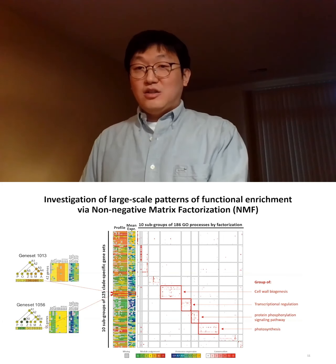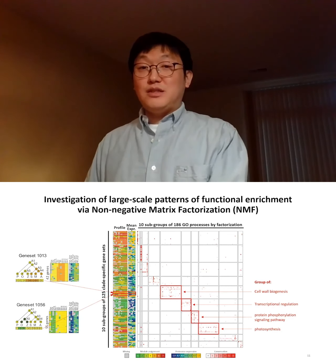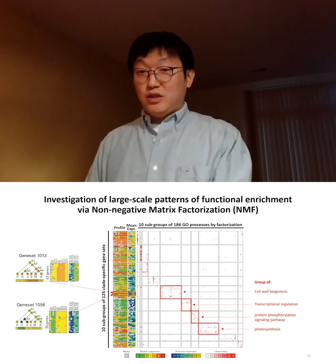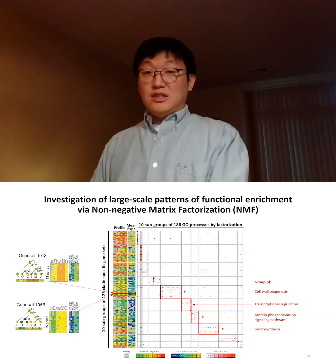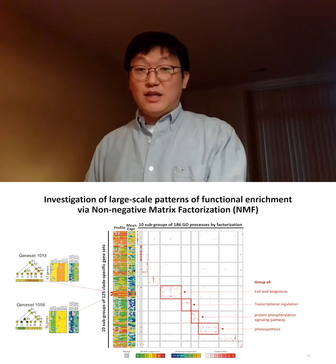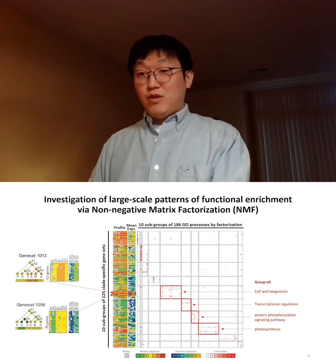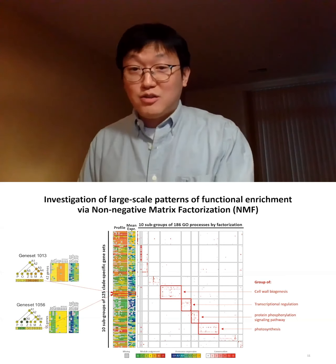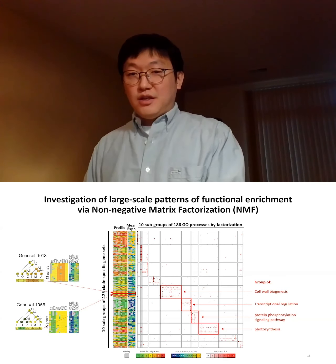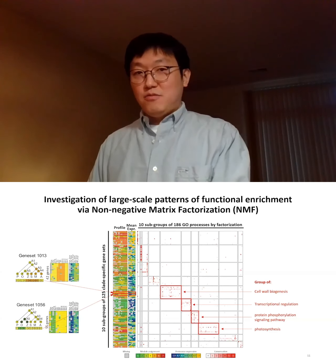To investigate large-scale patterns in the enrichment of clade-specific gene sets, we applied a non-negative matrix factorization (NMF)-based biclustering to the matrix of profiles consisting of counts for species showing enrichment for those GO processes. This analysis grouped both gene sets and associated process terms into tens of groups, enabling us to characterize representative process terms capturing cell wall biogenesis, transcription regulation, and similar functions. However, this represents only a small fraction of our gene sets, which may be due to the lack of comprehensive functional annotation in less-studied plant species.